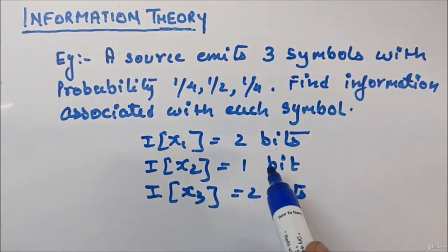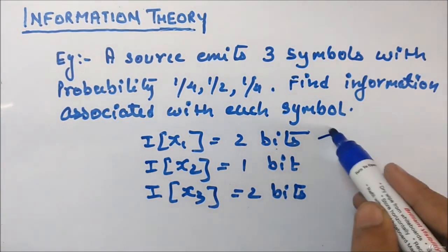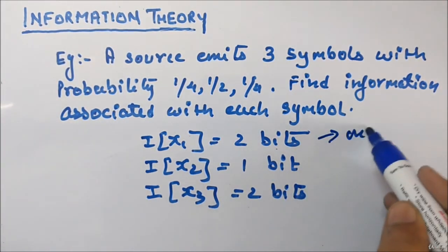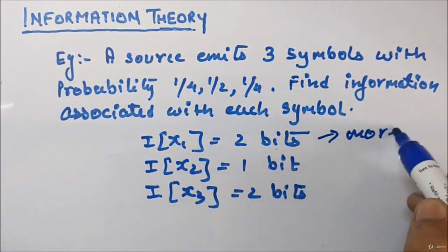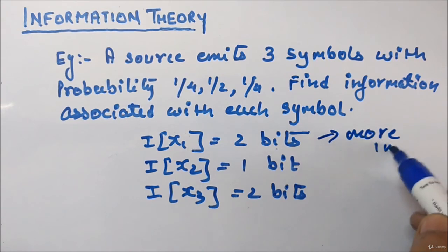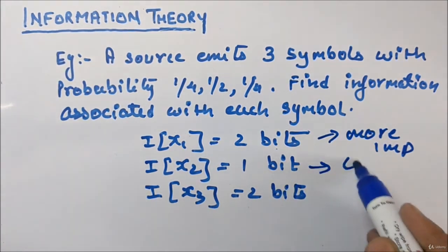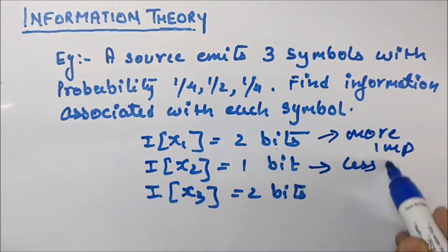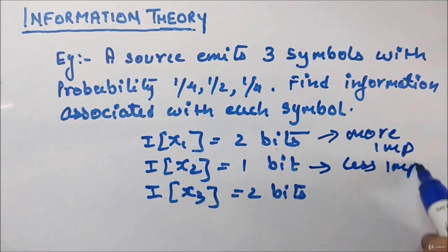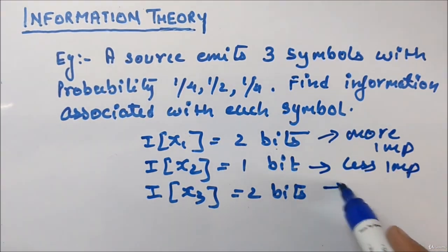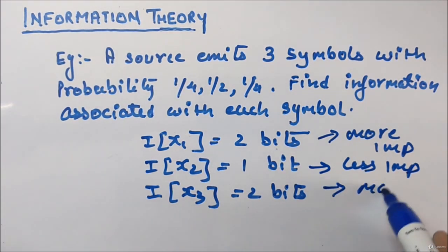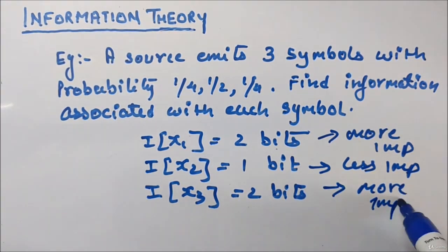So here you can see: x1 has 2 bits, x2 has 1 bit, and x3 has 2 bits. If the information is high, it means the symbol is more important; if the information is less, it is less important.